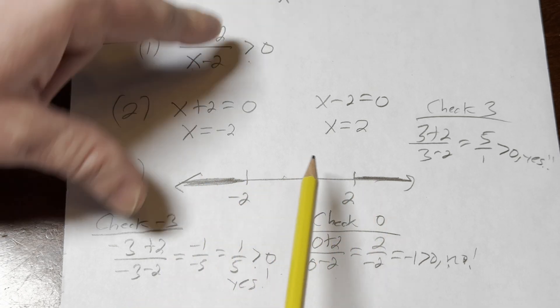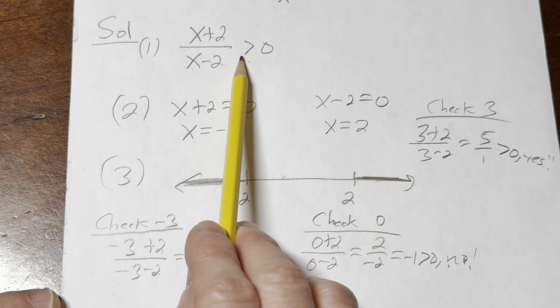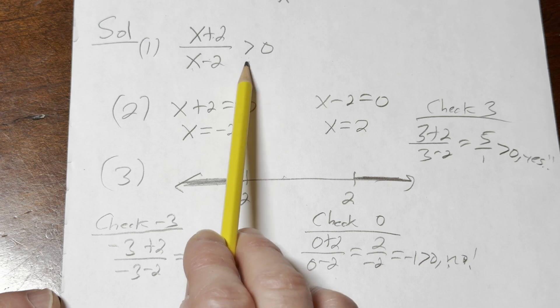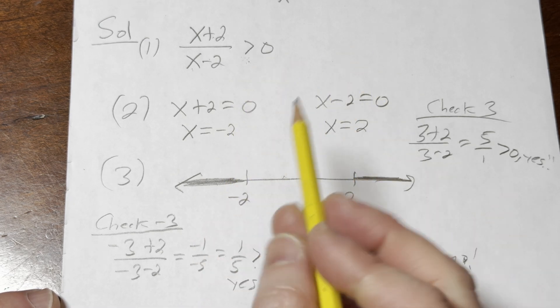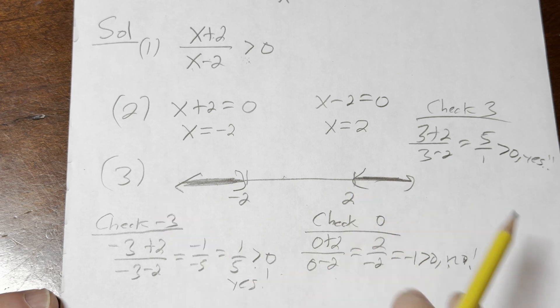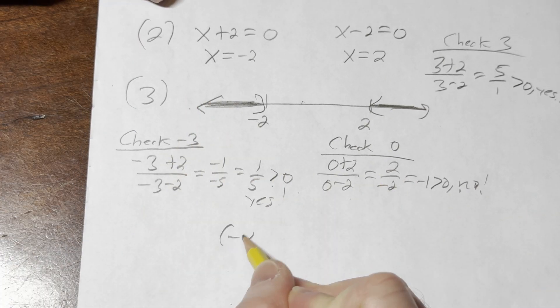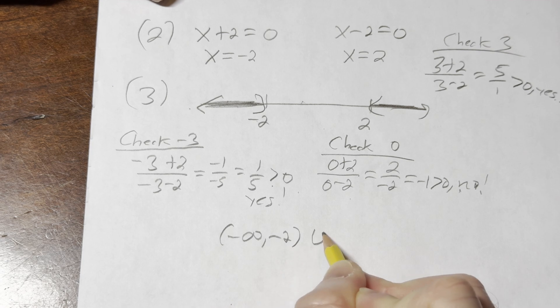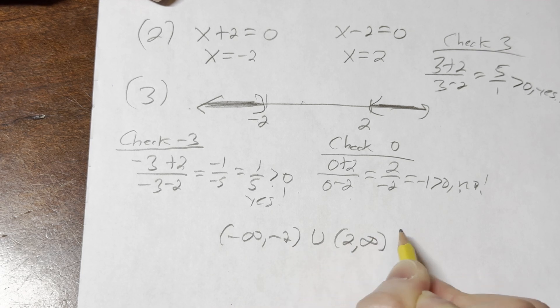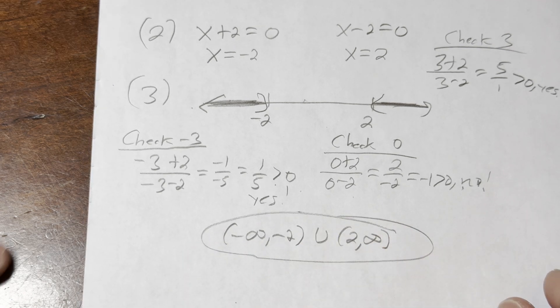So the answer is going to be with parentheses because we're not allowing for equality. Whenever we do, we use brackets. But because it's a strict inequality, a greater than, we use parentheses. So from the picture, we can get the answer. It's going to be negative infinity to -2, union 2 to infinity. And that would be the solution to this inequality.